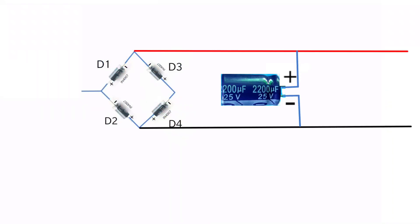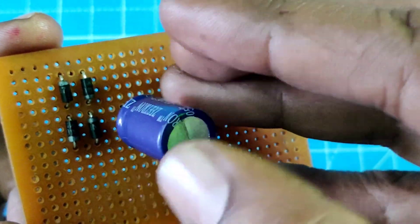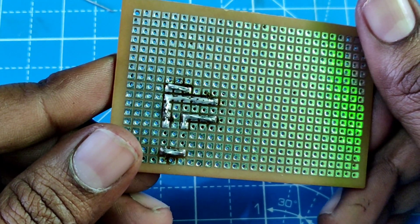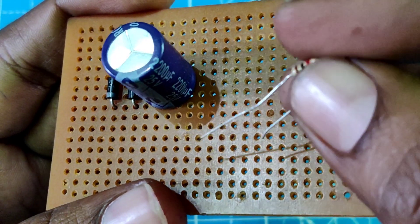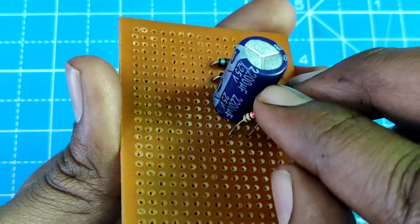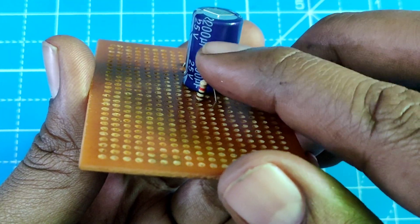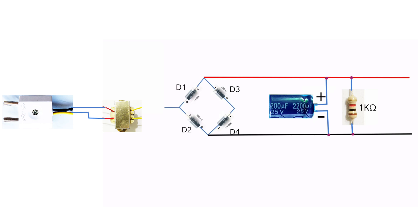Connect the positive terminal of the capacitor to the positive supply line and negative terminal to the negative supply line. Connect the 1 kilo ohm resistor across the positive and negative supply line. Connect the AC supply wires to the transformer.